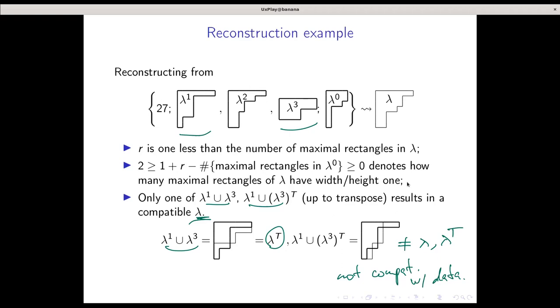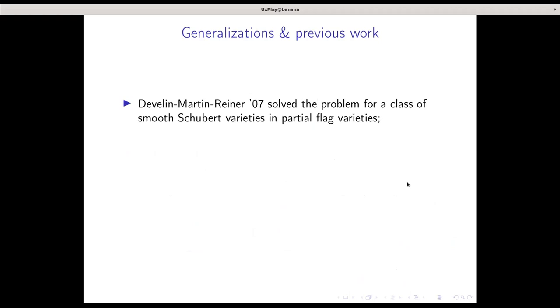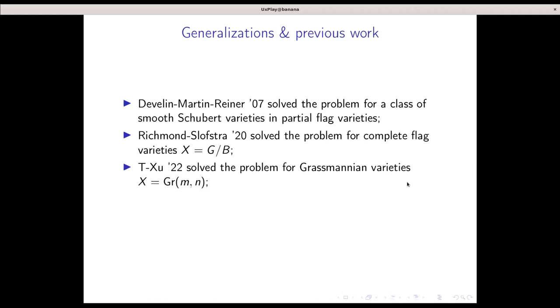The proof is more or less more case checking and so on, so I will skip that and instead focus on what kind of generalizations and similar work is being done. In 2007, Develin-Martin-Reiner solved this problem for a class of smooth Schubert varieties in partial flag varieties. In 2020, Richmond-Slofstra solved the problem for complete flag varieties G/B. In 2022, myself and Xu solved this problem for Grassmannian varieties. It's a work in progress, but myself, Richmond, and Xu are solving the problem for cominuscule flag varieties.